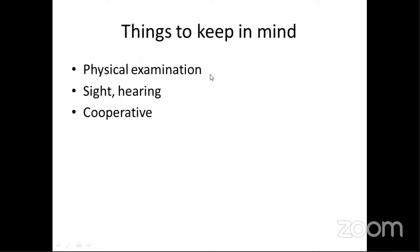Before you start a psychiatric examination, keep some things in mind. First, you should do a physical examination — general physical examination, checking vitals, basic auscultation, basic neurological. Finish those in the beginning itself, because if there are physical abnormalities, you have to take care of that first. Then check the patient's sight and hearing, because psychiatric examination involves asking questions — if the patient cannot hear or see well, you can't have a reliable examination. And the patient should be cooperative. If the patient is acutely agitated, first calm them down by giving a sedative.